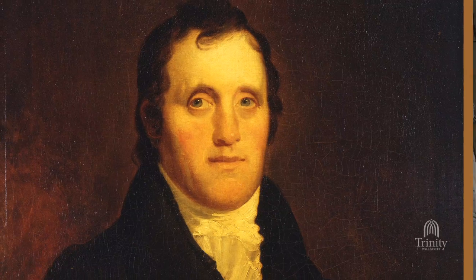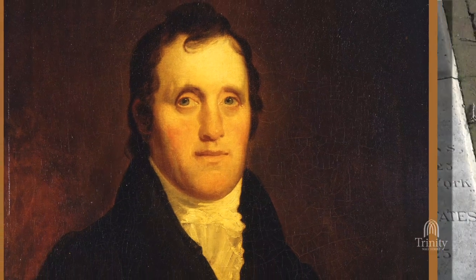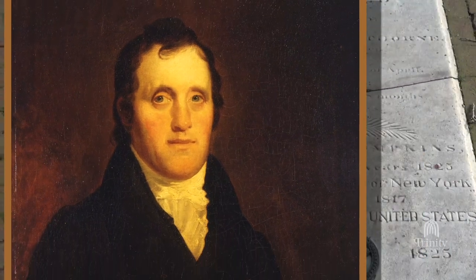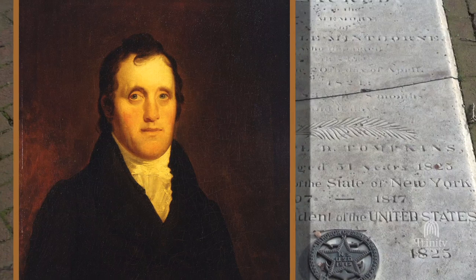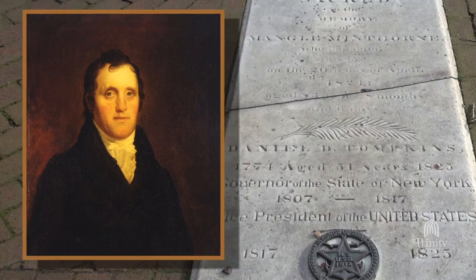"Before the arrival of that period, most colored persons born previous to the 4th of July 1799 and others now free by the existing laws will have become of very little value to their owners. Indeed, many will, by that time, have become an expensive burden." — New York Governor Daniel Tompkins, 1817.